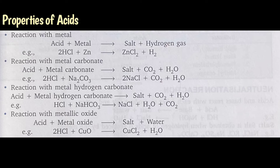Next is reaction of acid with metal carbonate. When acid reacts with metal carbonate, carbon dioxide gas is liberated and salt and water are formed. For example, when hydrochloric acid reacts with sodium carbonate, sodium chloride (NaCl) is formed along with water and carbon dioxide. Next is reaction with metal hydrogen carbonate. When acid reacts with metal hydrogen carbonate, salt, carbon dioxide and water are formed. For example, when hydrochloric acid reacts with sodium hydrogen carbonate, sodium chloride, water and carbon dioxide are formed.